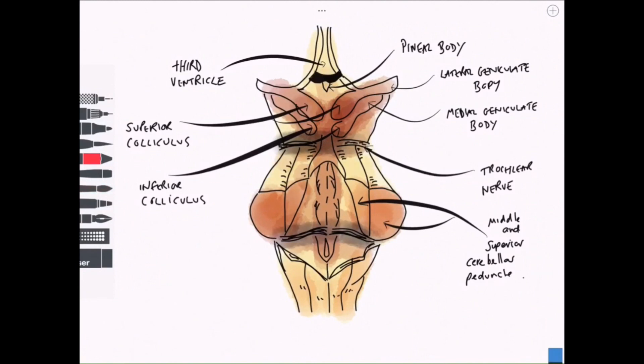So this is a very common schematic of the brainstem, but we're going to take a look at a cross-section. We're going to take a look at a cross-section at the level of the superior colliculus and the level of the inferior colliculus.